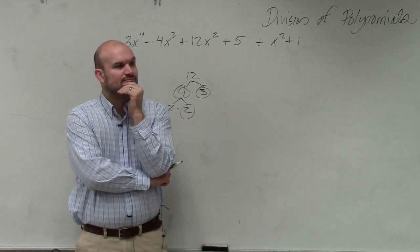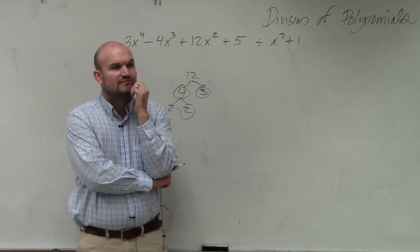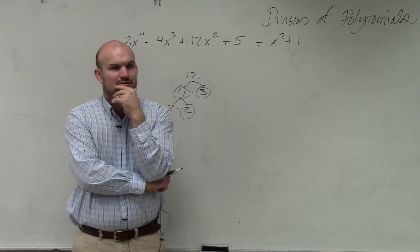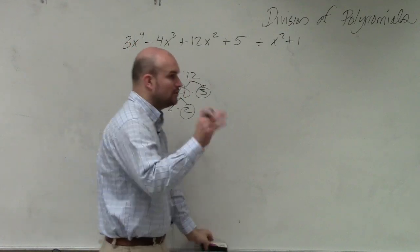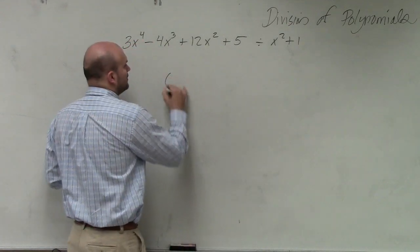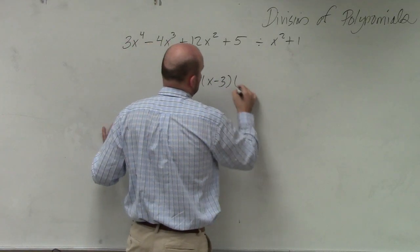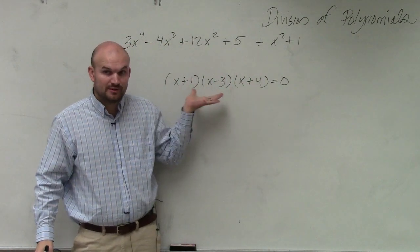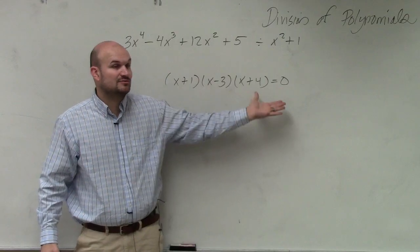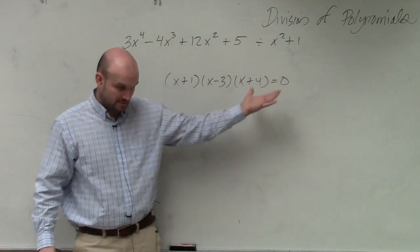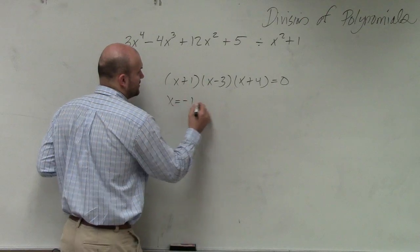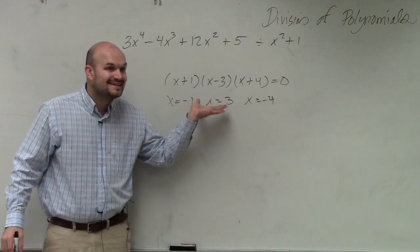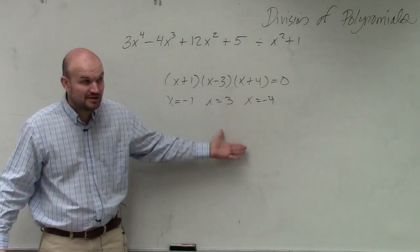What else do you guys remember about factors? We can always write factors as — using the factors we can find the zeros. For example: x plus 1 times x minus 3 times x plus 4 equals 0. Do you guys agree that those are all factors of the polynomial? When we have our factors equal to 0, we apply the zero product property. So x equals negative 1, x equals 3, x equals negative 4. Those are all the zeros, or the solutions, or the real x-intercepts.